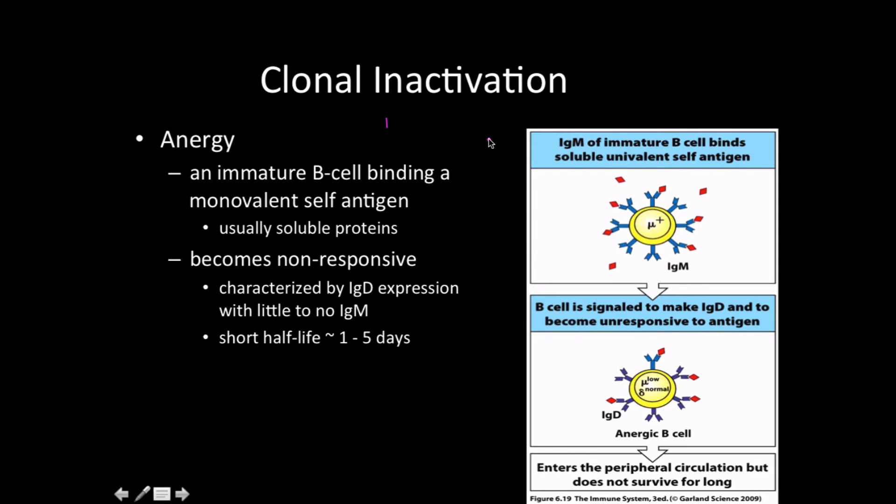Clonal inactivation happens with monovalent self-antigen, usually in the blood vessel or periphery. We may have a B-cell reacting to one of our soluble proteins in the bloodstream. Whereas we can't kill it because the debris would cause problematic situations, we just inactivate it. After about five days at most, it dies through entropy. We don't waste ATP and resources cleaning up dead cells in your bloodstream.